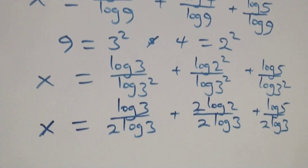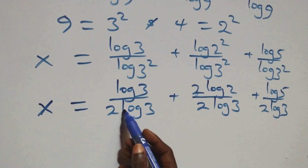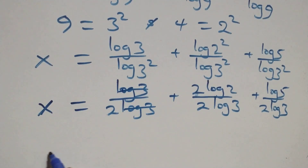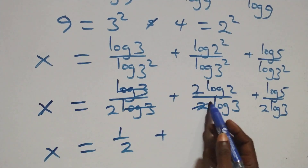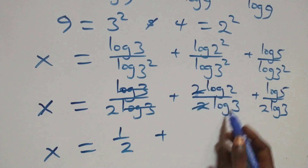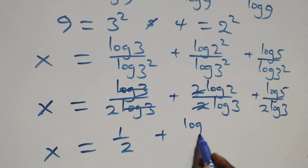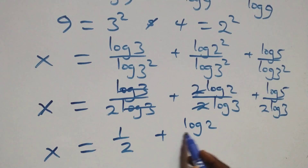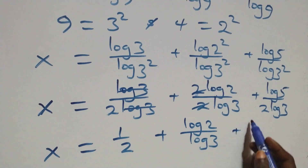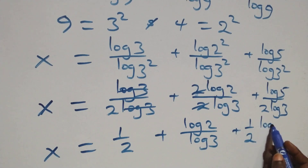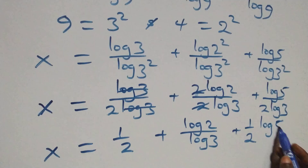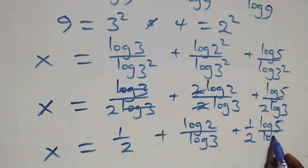From here, log 3 cancels with log 3, leaving 1 over 2. The 2s in the second fraction cancel each other, leaving log 2 over log 3. So x equals to 1 over 2, plus log 2 over log 3, plus 1 over 2 times log 5 over log 3.